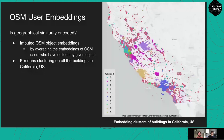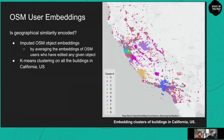This is remarkable because our training data — just temporal sequences of user IDs — has no direct linkage to user reputation. The second question: is geographical similarity encoded? To answer this, we imputed OSM object embeddings by averaging the embeddings of users who edited any given object, then performed k-means clustering on all buildings in California. Nearby buildings are generally clustered together, meaning geographical similarity has been encoded — even though our training data has no direct linkage to user location.